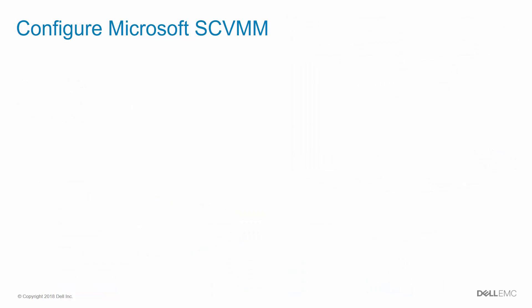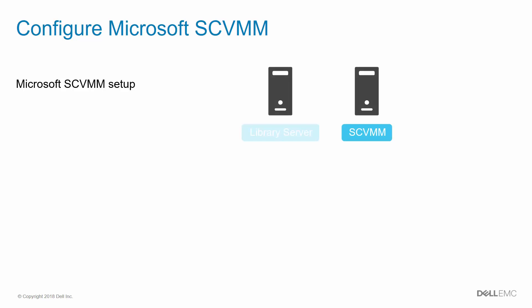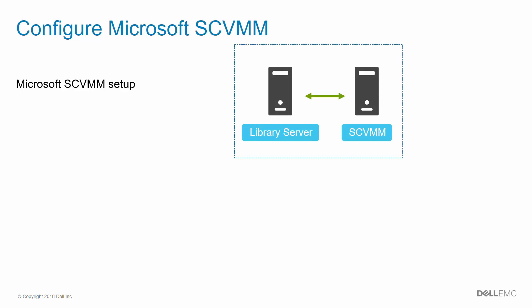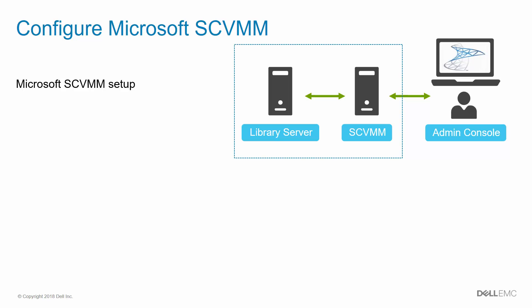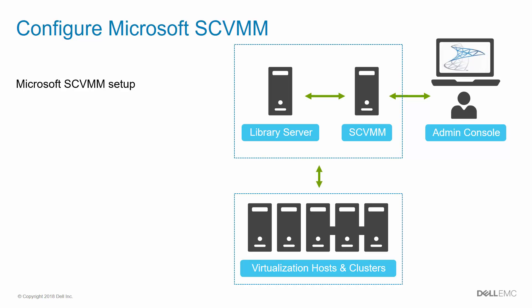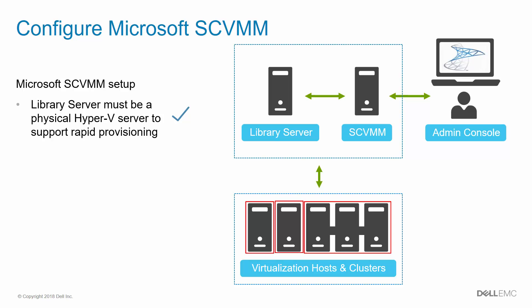Next, let's review the essential components of a basic SCVMM environment. The core server components include the SCVMM server and the Library server. These roles can be placed on the same server, or on separate servers, as shown here. The SCVMM environment is managed from the SCVMM admin console, and one or more virtualization hosts or clusters serve as targets for deploying VMs, with two Hyper-V hosts and a three-node Hyper-V cluster shown here.